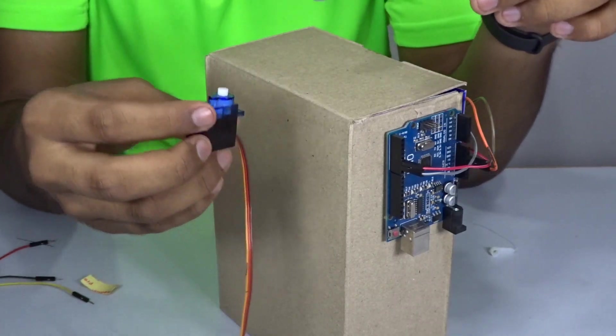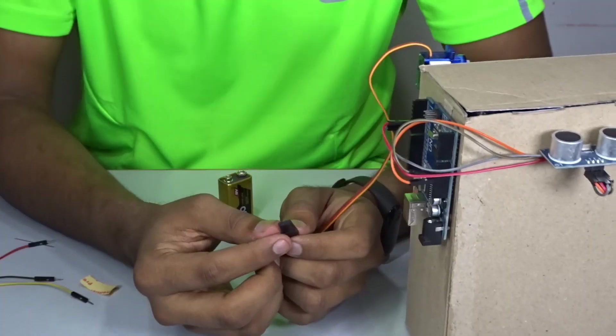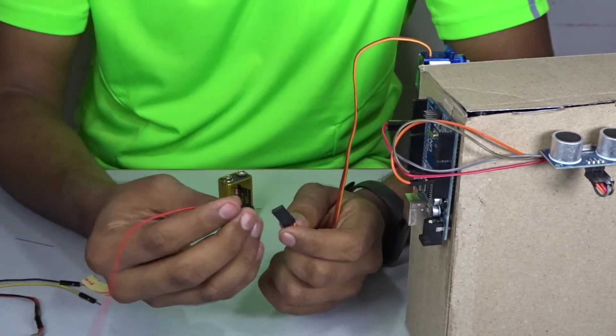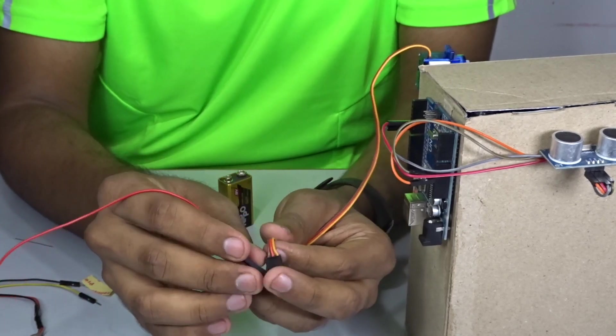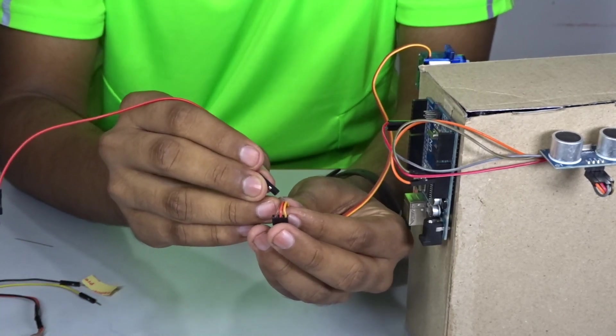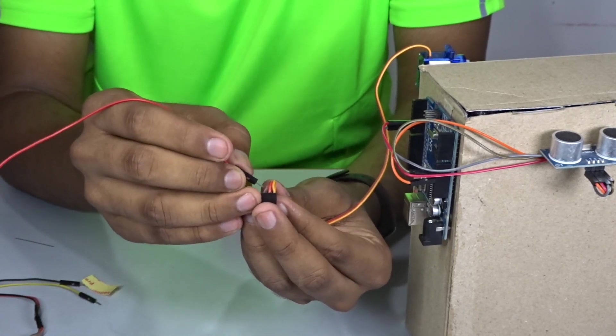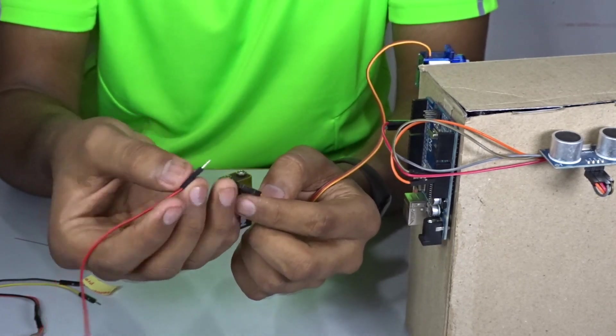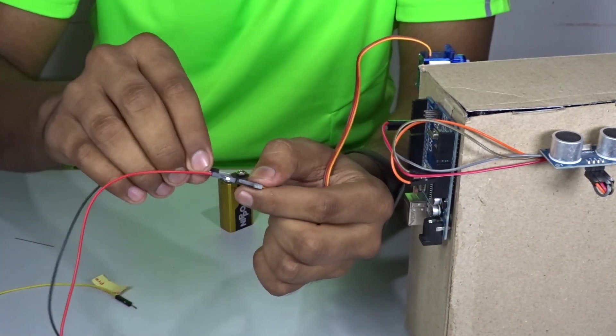Now take some double sided tape and mount the servo right in the corner like this. Now to connect the servo I am using these male to male jumper wires. And as you can tell by the color pattern here, the orange is the signal wire, the red is the positive 5 volts and brown is the ground. So I am going to convert them into these colors right here.